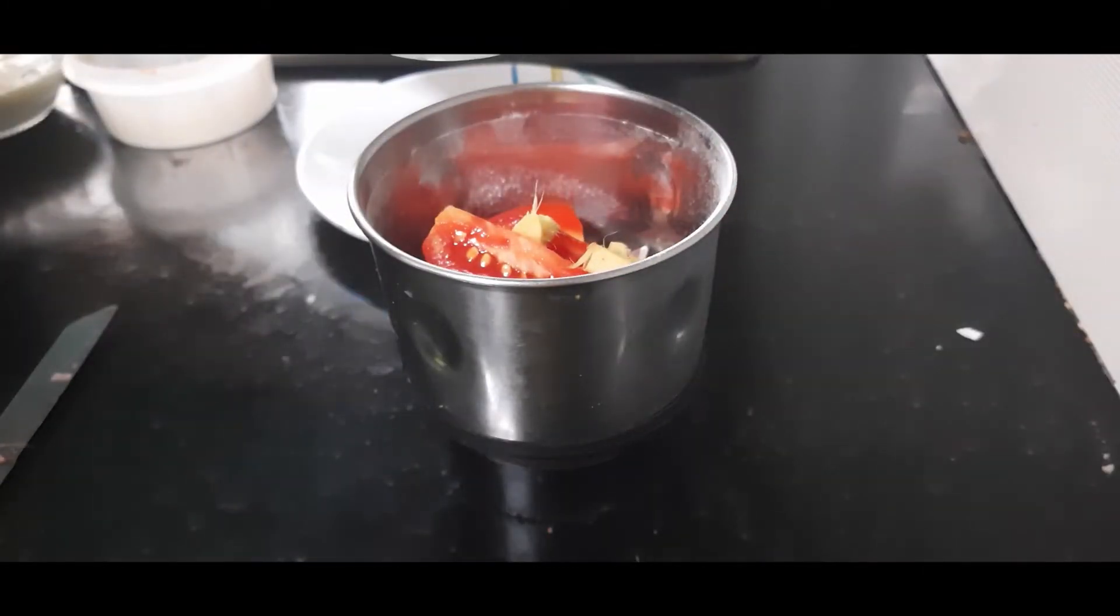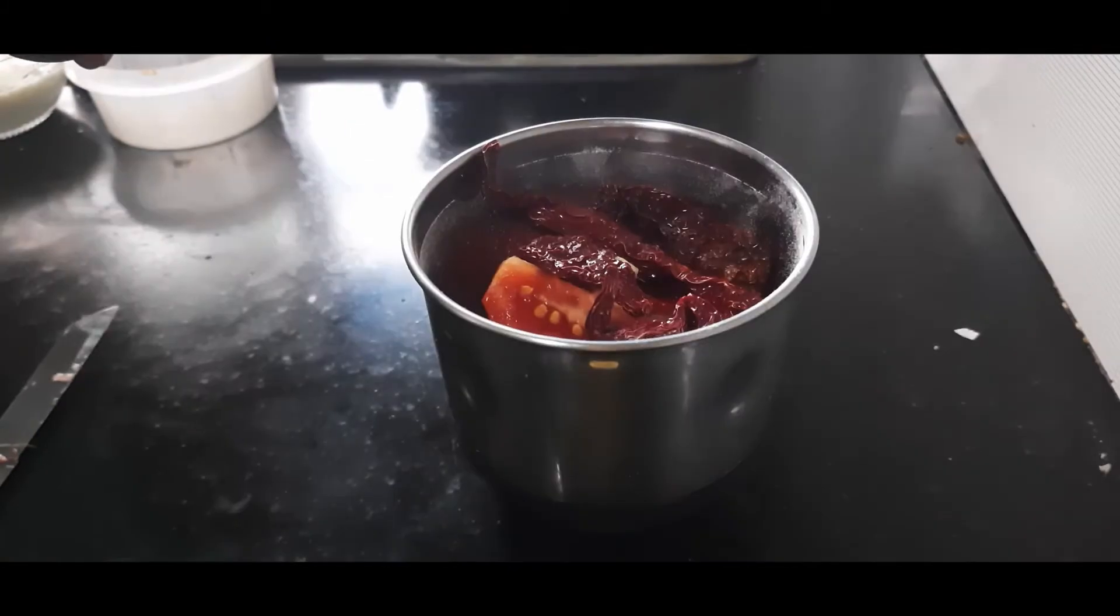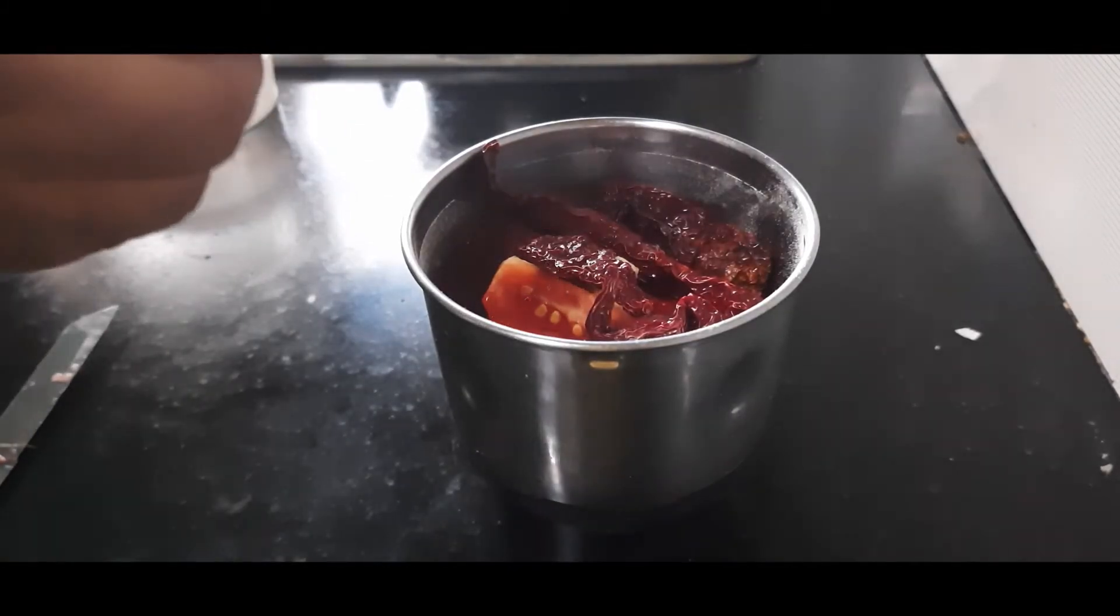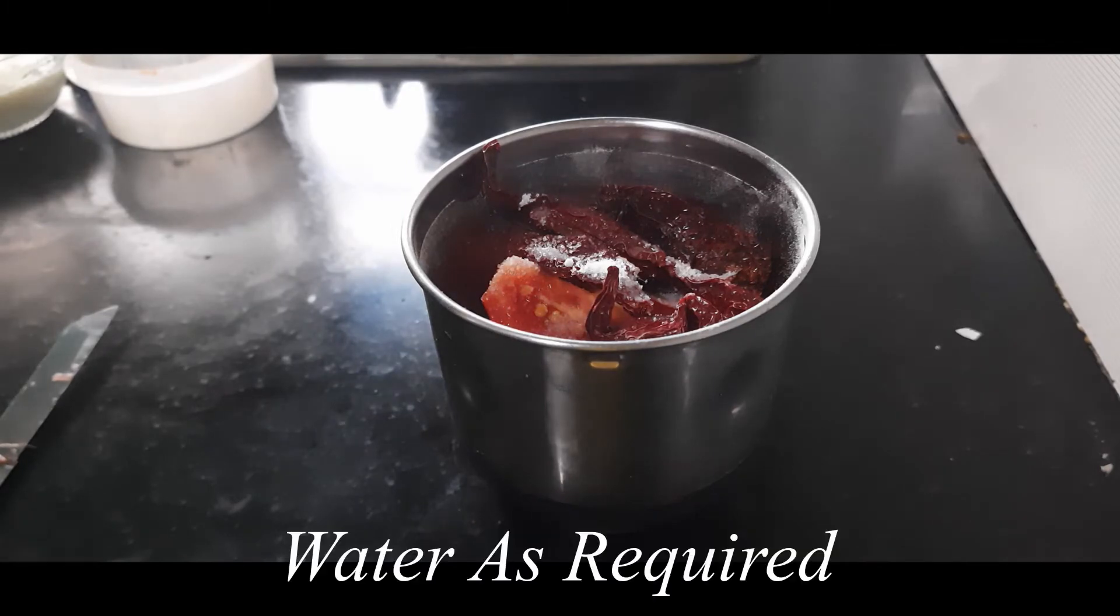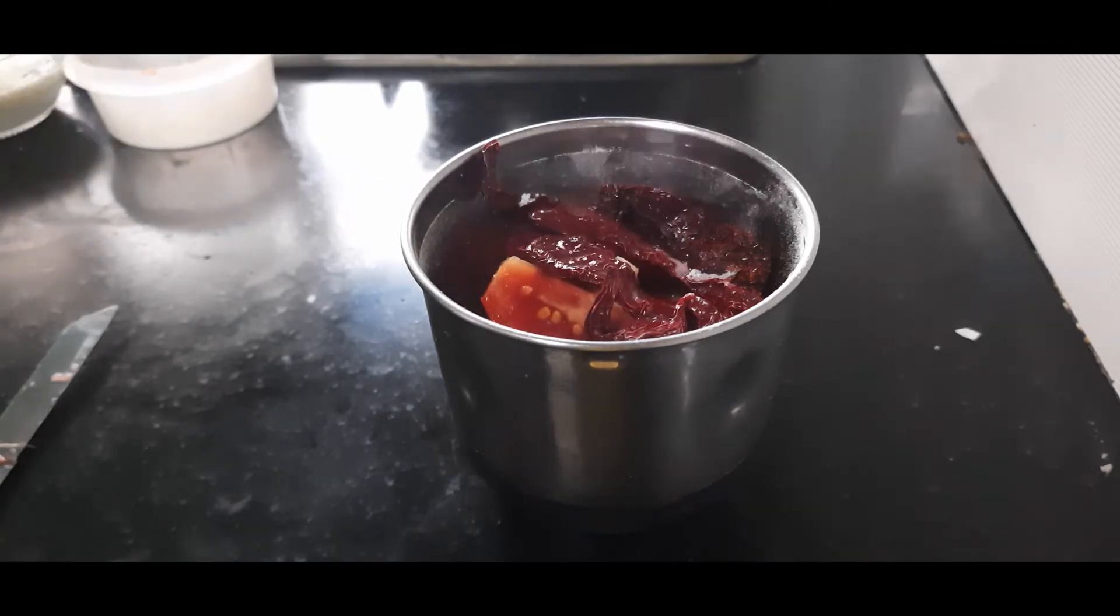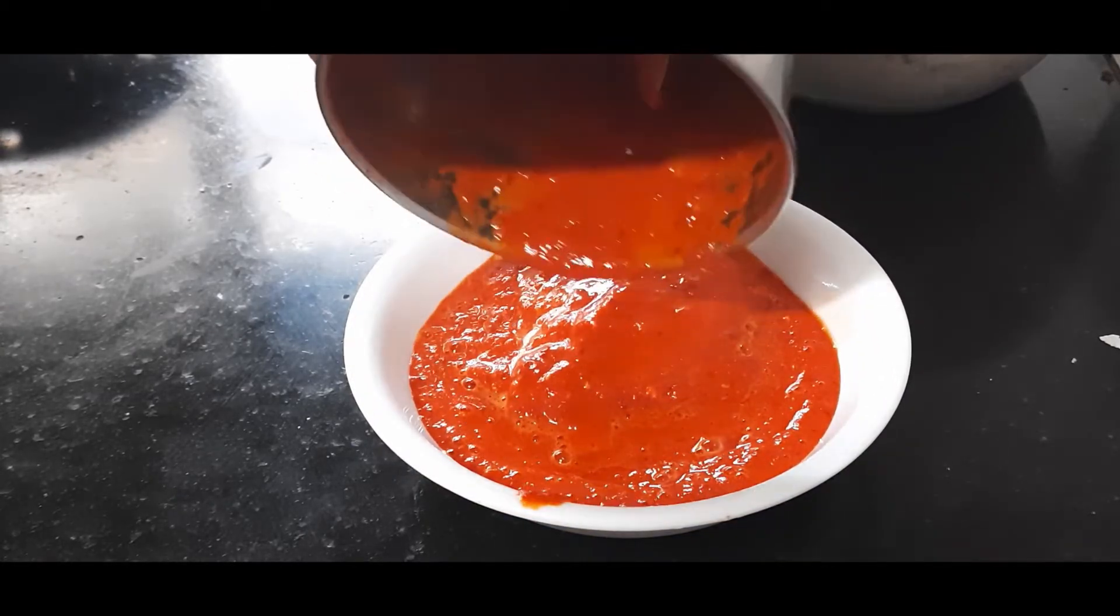Now all these ingredients I'll add into a mixy jar: the red chilies. Just add a pinch of salt. I'm adding half a teaspoon of salt here. Add water as required and let's grind this to a fine paste. The chutney is ready now, friends, and this is very tangy. No tempering is required. It's ready to eat.